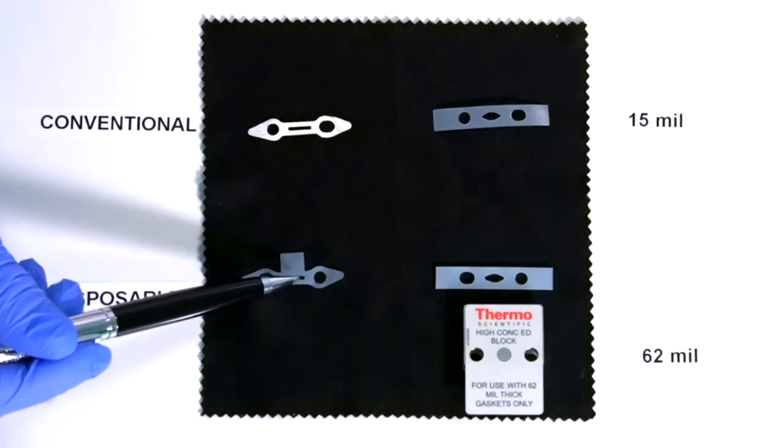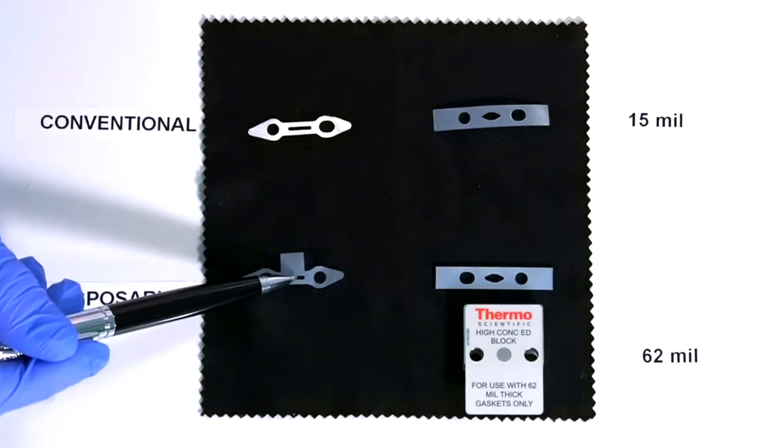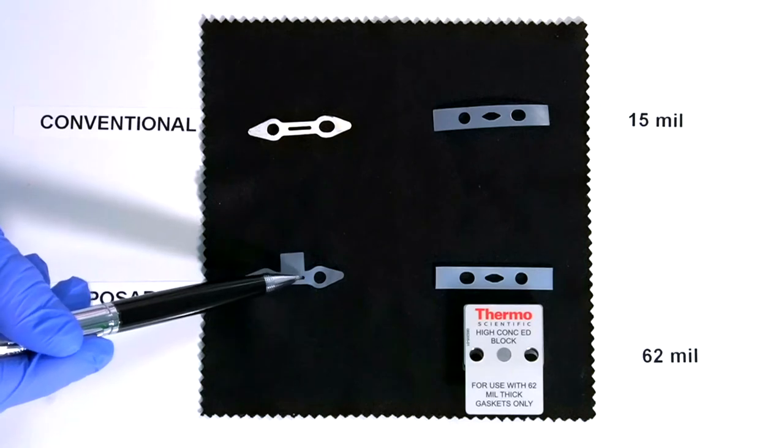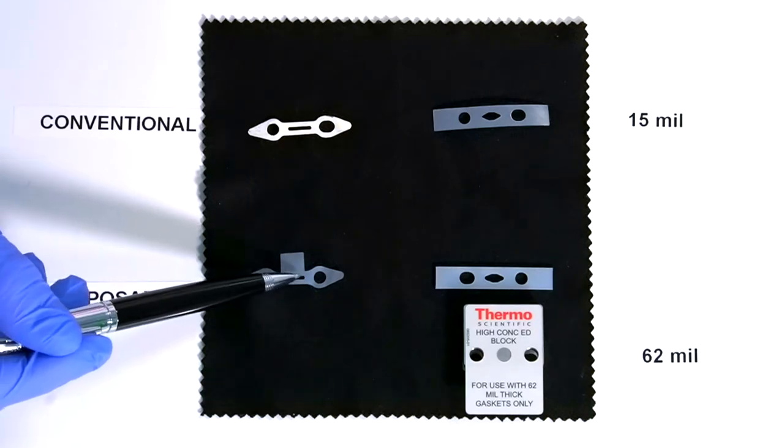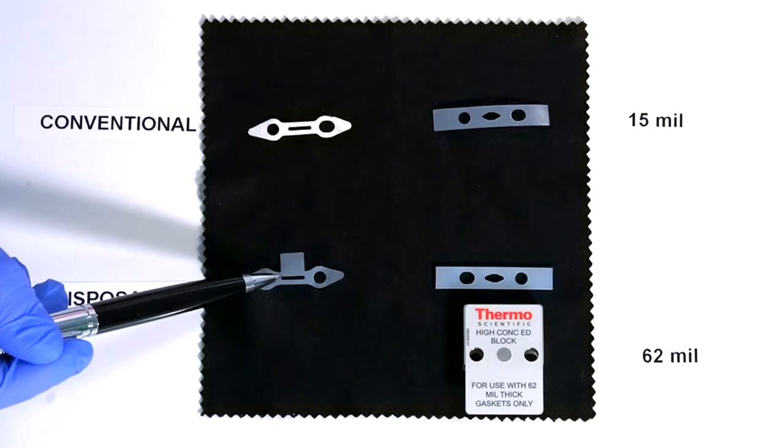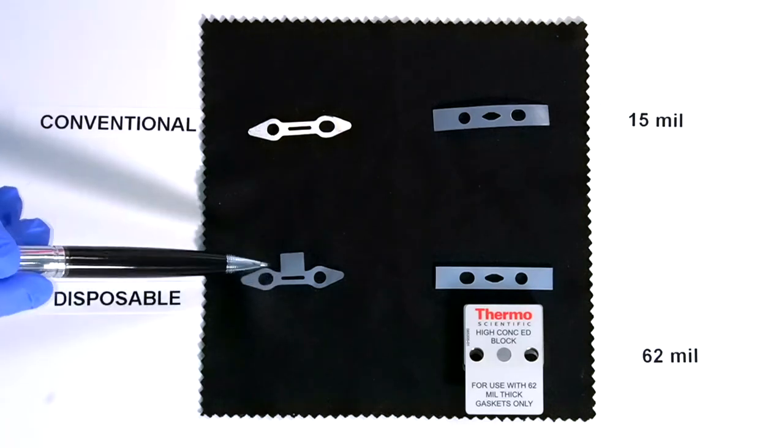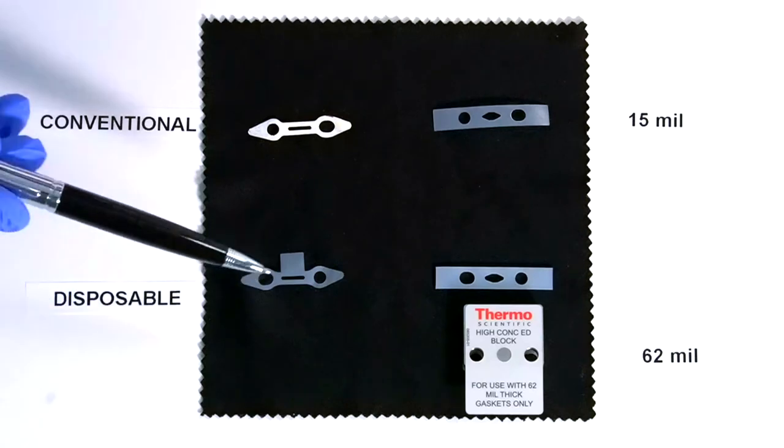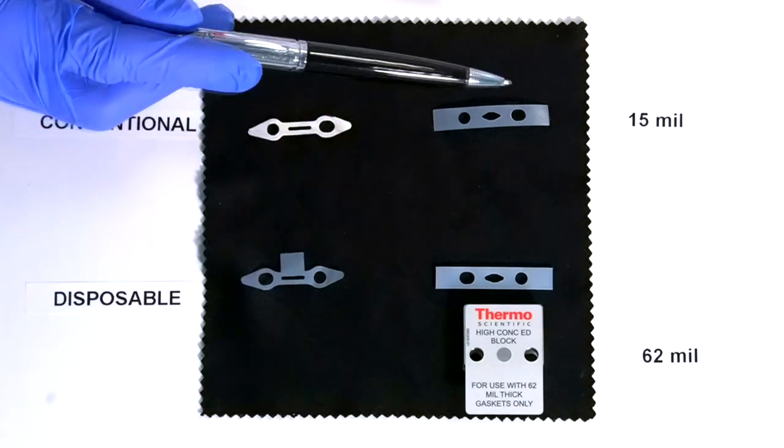Now remembering that the channel in here—the little slot—is what forms the cell and that's where the eluent flows, it means that if we vary the thickness of the gasket we can change the volume of the cell. That can have an effect on our response and that's where the gaskets on the right hand side come in.